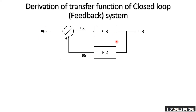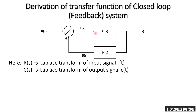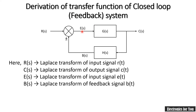This is a closed loop system because it consists of a feedback. R(S) is the Laplace transform of the input signal and C(S) is the Laplace transform of the output signal. Further, new signals are there — E(S) and B(S). E(S) is the signal generated at the summing point; it is called the error signal. B(S) is the feedback signal, so it is the Laplace transform of the feedback signal.